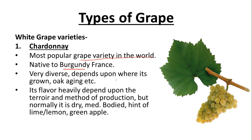Chardonnay is very diverse, depending on where it's grown, oak aging, and other factors. If grown in a cool climate, it gives very high-acid, very crisp wines. If grown in warmer climates, it gives mellow flavors. For example, Chablis Chardonnay from France will taste totally different from Chardonnay grown in California or Australia — the color, taste, and aroma will all be different. Its flavor heavily depends on the terroir, which is the climate, microclimate, soil, and latitude of a particular region.